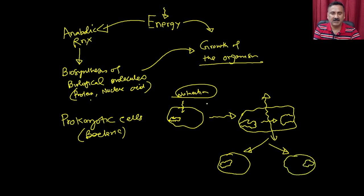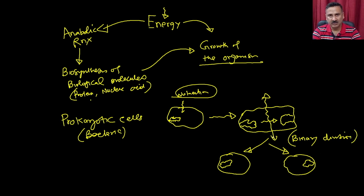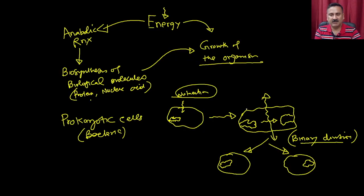That is how the bacteria grows from one to another. This kind of division is called binary division, which can be equal or unequal division. Apart from binary division, there are also other kinds such as fragmentation, but binary division is the most common in prokaryotic systems.